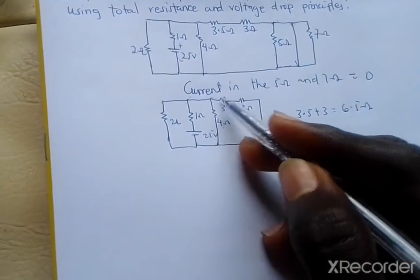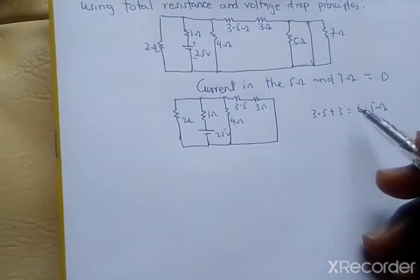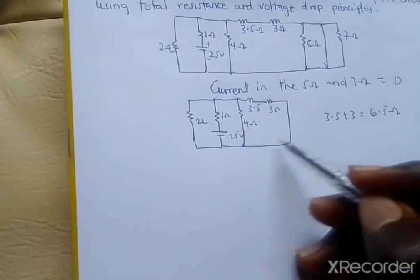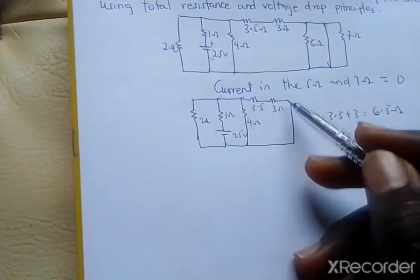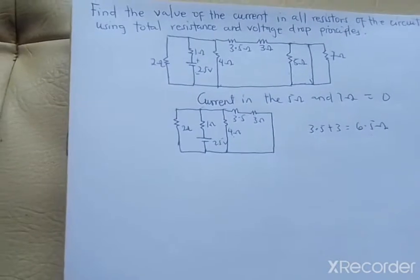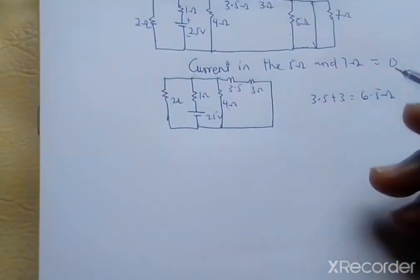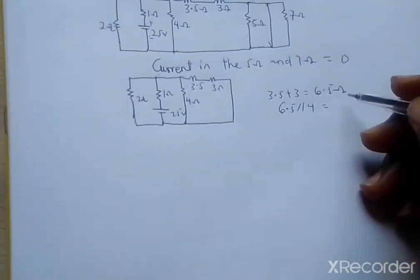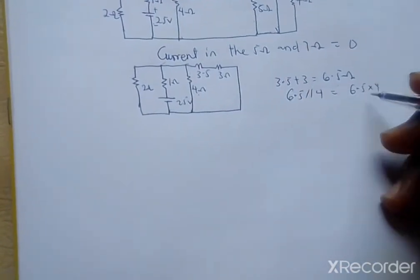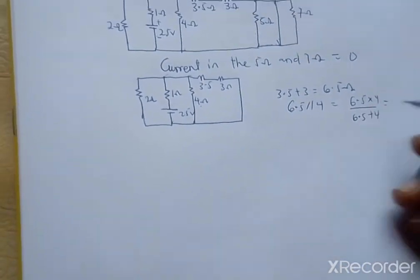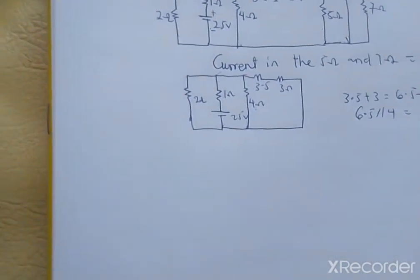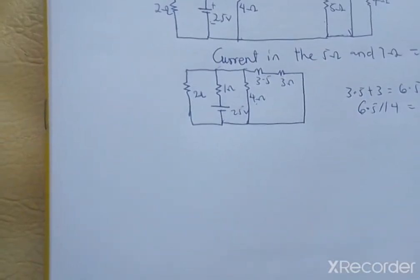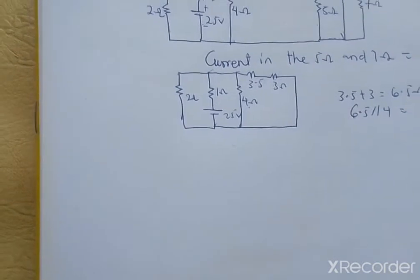This 6.5 ohms is in turn in parallel with the 4 ohms, because when combined they form a single equivalent resistor and you can traverse either path without meeting any other element. So 6.5 is in parallel with 4, giving an effective value of 6.5 times 4 divided by 6.5 plus 4, which equals 52 over 21 ohms.